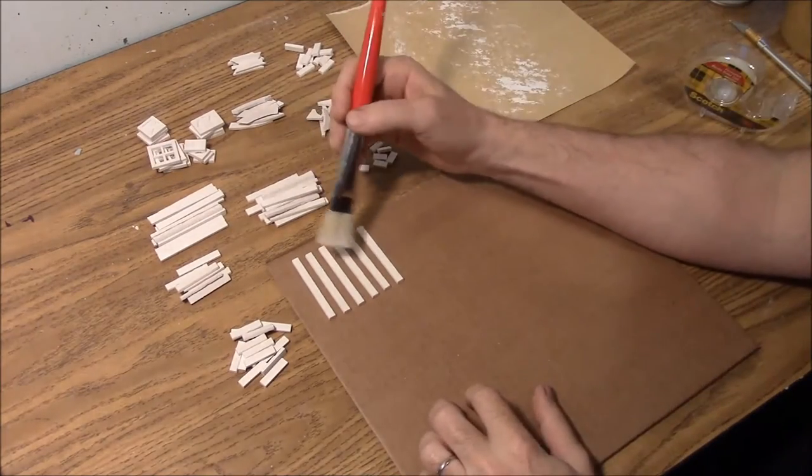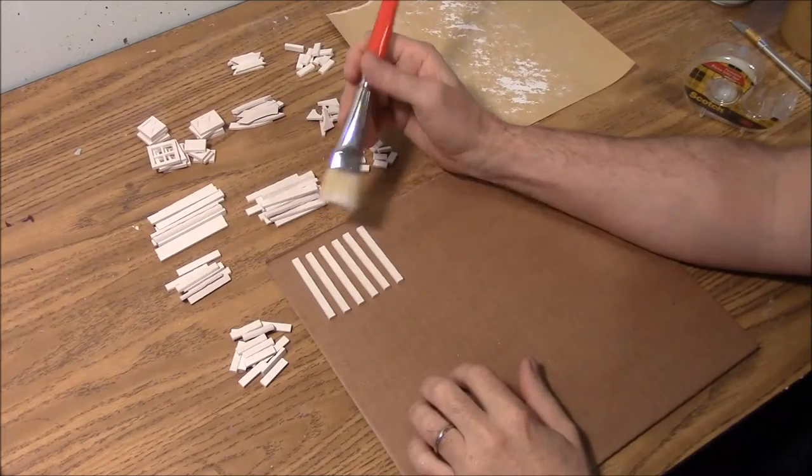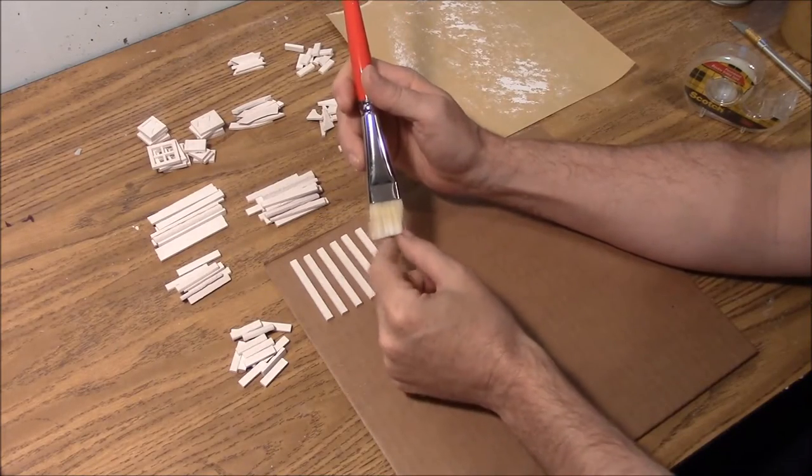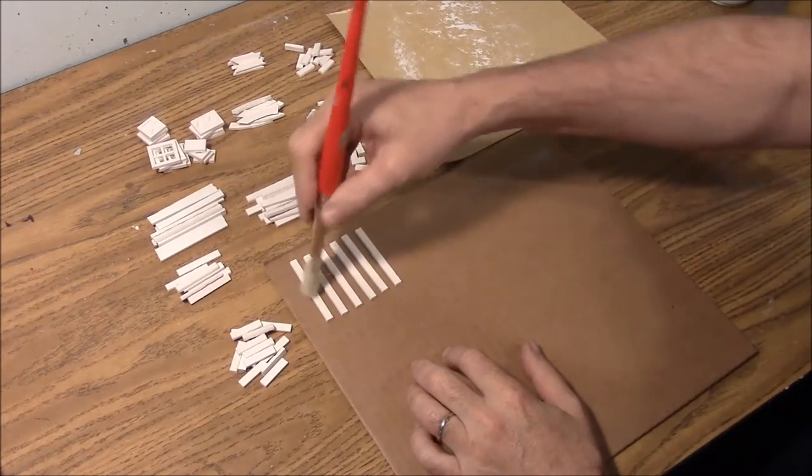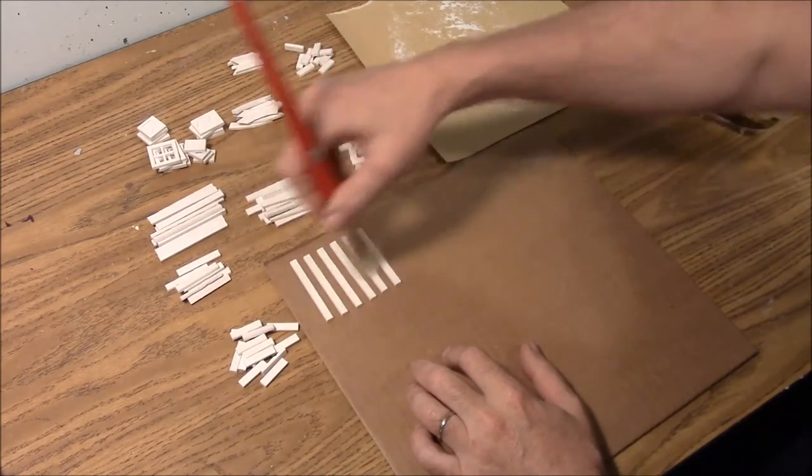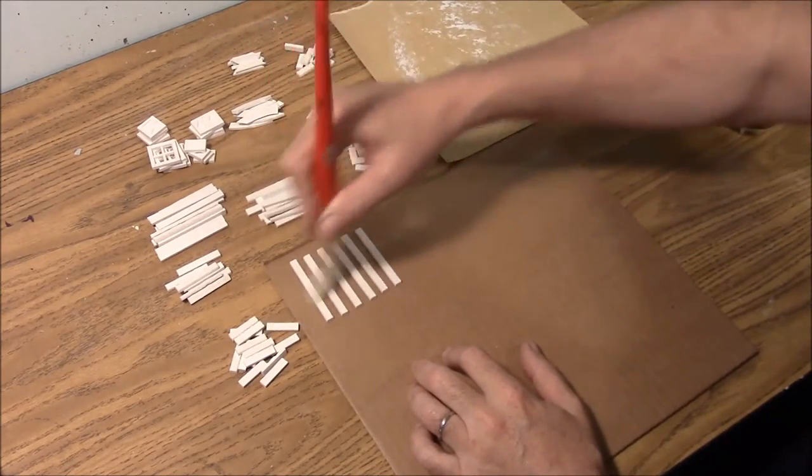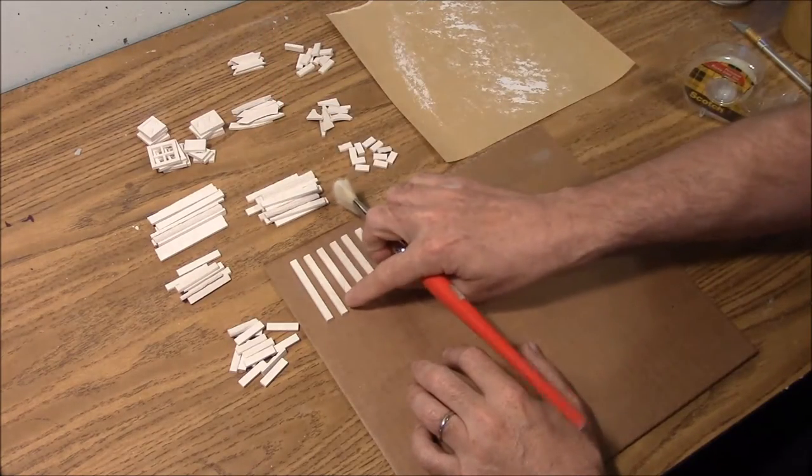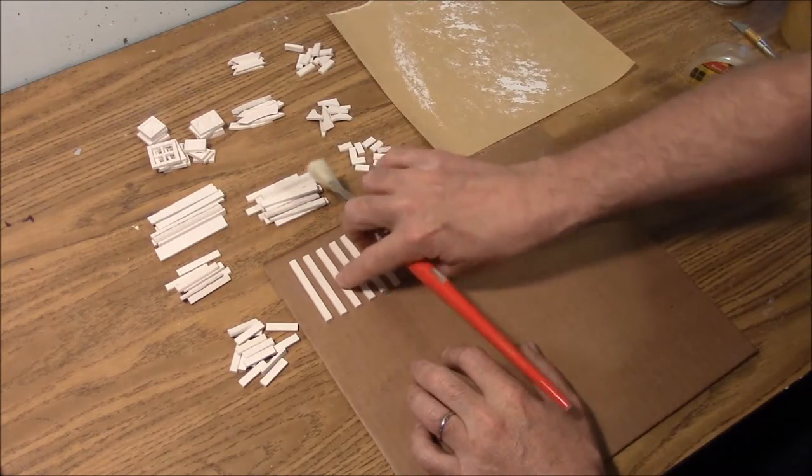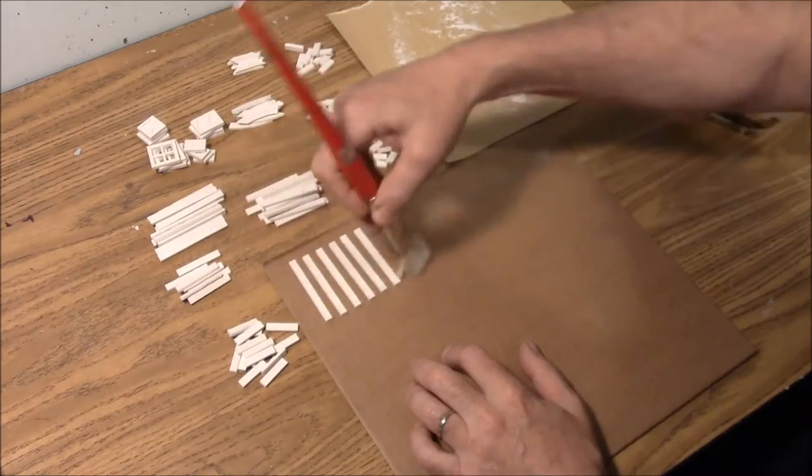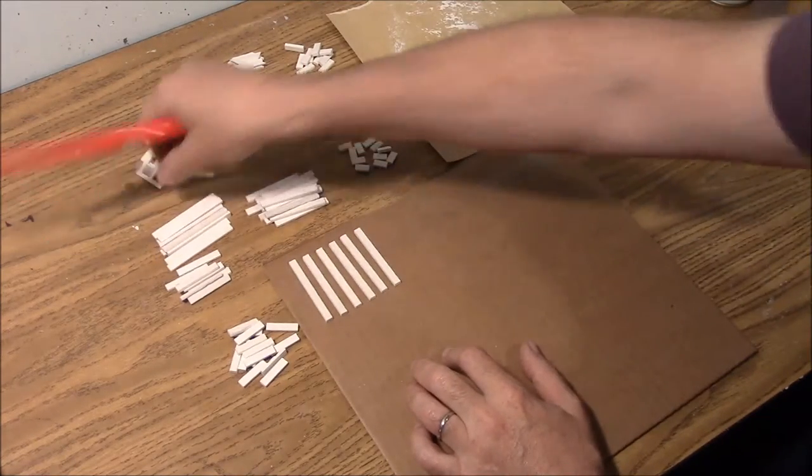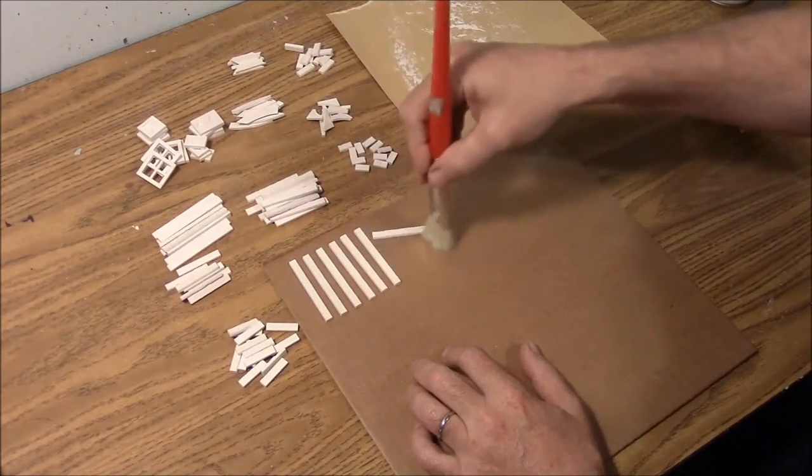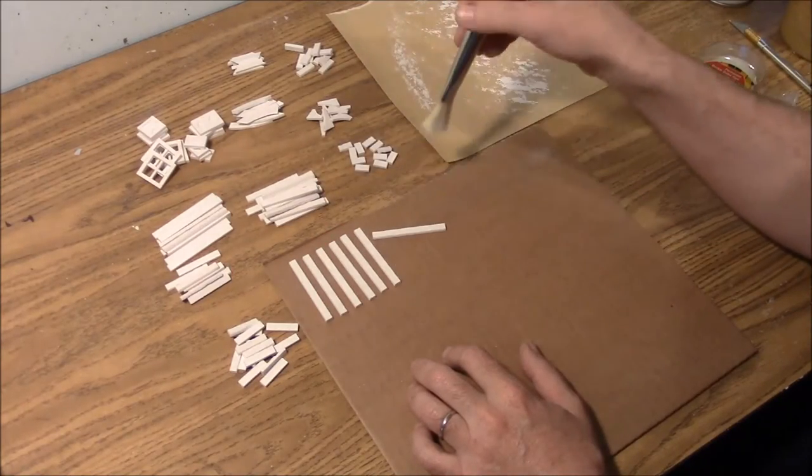Now before you go too far, you want to make sure that these planks are stuck down good. I suggest taking a 3/4 inch wide soft bristle brush, the same brush you're going to dry brush with, and go ahead and brush back and forth over these planks and make sure they stay down. If they don't come up, then you know you can dry brush it without a problem. If for some reason you brush over your planks and they start coming off, that's going to give you a problem later on.